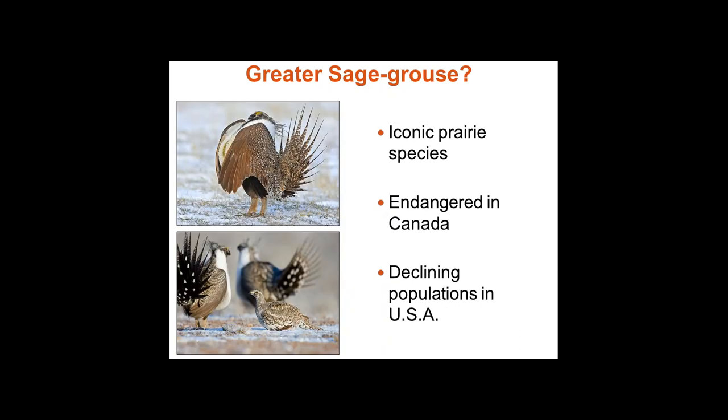Greater sage-grouse are really an iconic prairie species — I like to refer to them as the polar bear of the prairies. They're just an icon, very charismatic. They are endangered in Canada and have populations declining throughout the US.